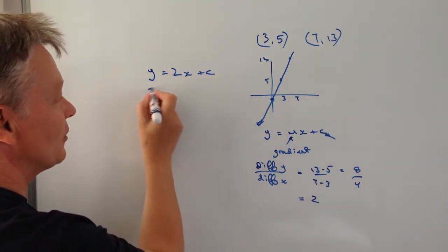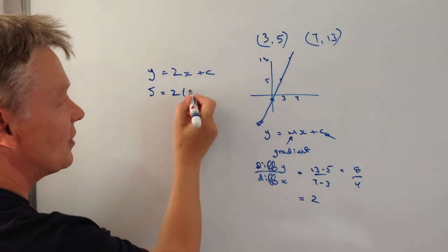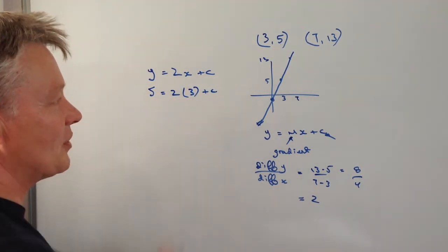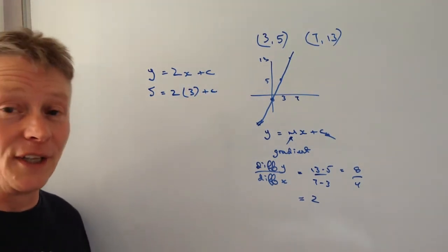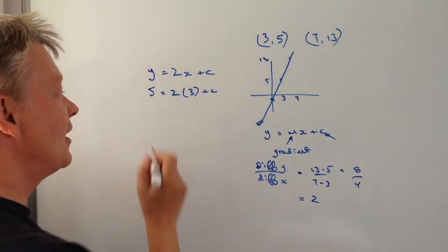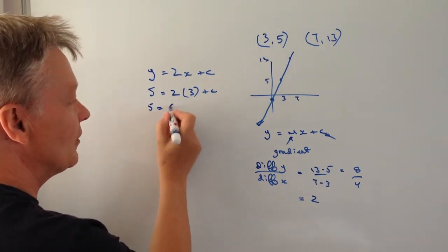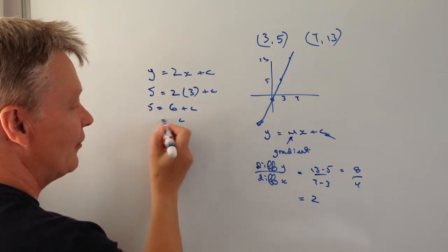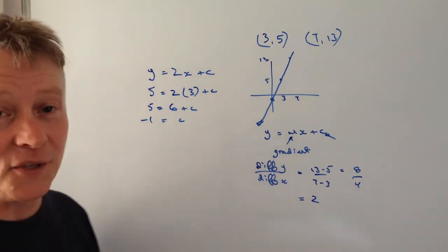So 5 equals 2 times 3 plus c. And then it's really just a matter of a little bit of algebra to sort that one out. So we've got 5 equals 6 plus c, so therefore c equals minus 1.